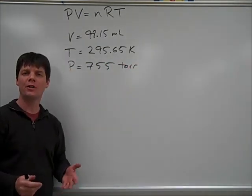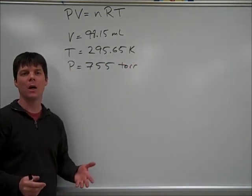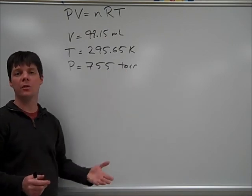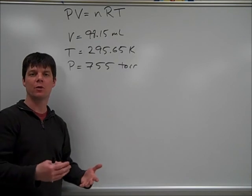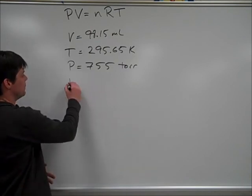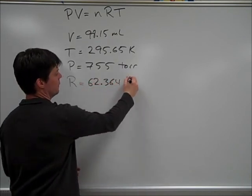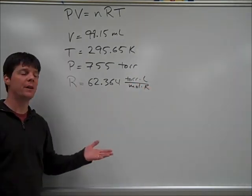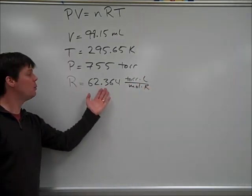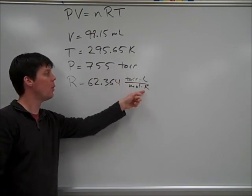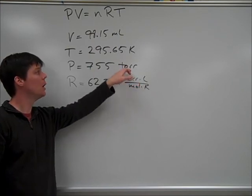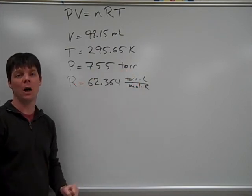Finally, we need to know which R value to use in this problem. Because we're dealing with pressure in units of torr, we need to choose the R constant which is going to agree with that. So, the R unit we use to solve this problem is 62.364 torr liters per mole Kelvin. Again, we want to match the units in the R value, torr, with the unit for pressure given in the problem.